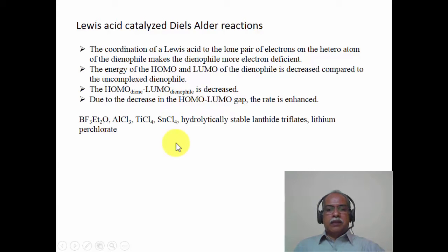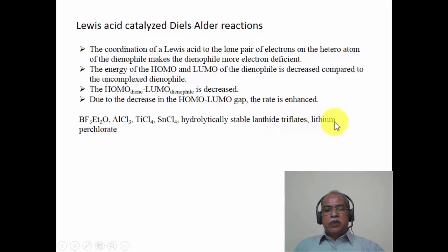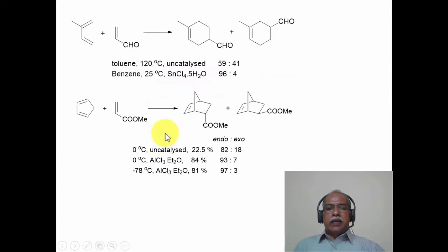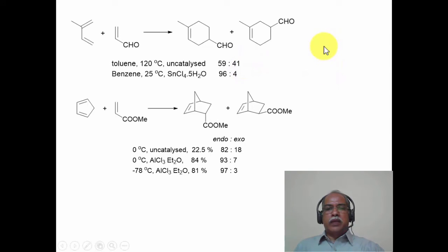Commonly used Lewis acids include boron trifluoride, aluminum chloride, titanium tetrachloride, tin tetrachloride, hydrolytically stable lanthanide triflates such as scandium triflate and ytterbium triflate, and lithium perchlorate. The stereo selectivity in terms of ortho-para ratio can also be changed using a Lewis acid. For example, the reaction of 2-methylbutadiene with acrolein uncatalyzed in toluene at 120 degrees gives ortho:meta:para adducts in about 59:41 ratio.